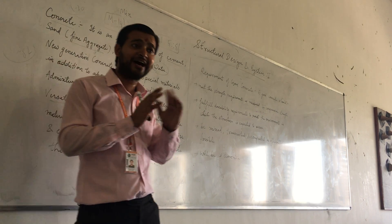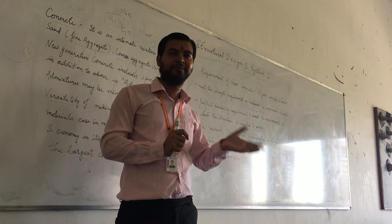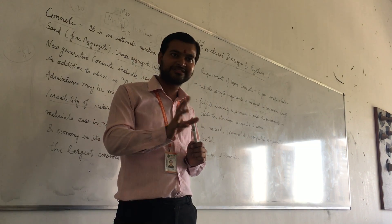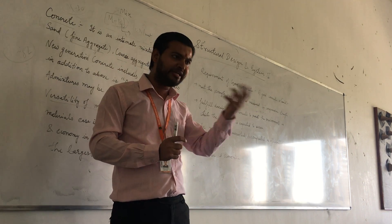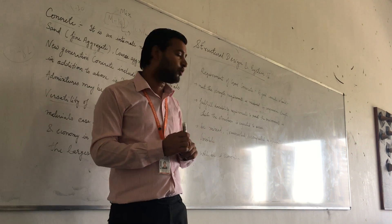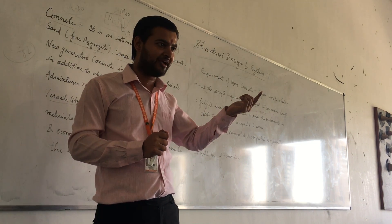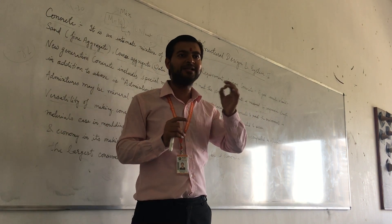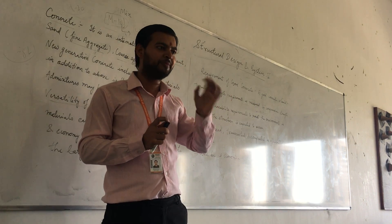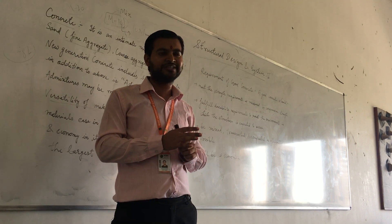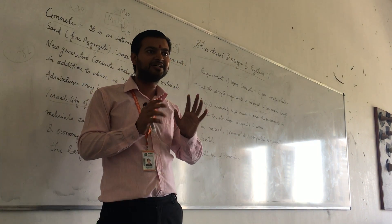The first step is to find the target mean strength. While designing a structural member, the client specifies the required strength — for example, 20 N per mm². But we have to design for a slightly higher value, like 22 or 25 N per mm², to account for safety. We use empirical formulas rather than exact mathematical formulas, since standard deviation accounts for quality variations.